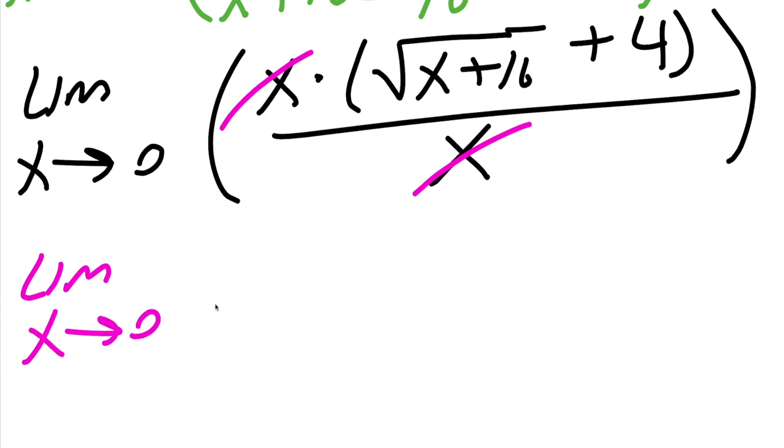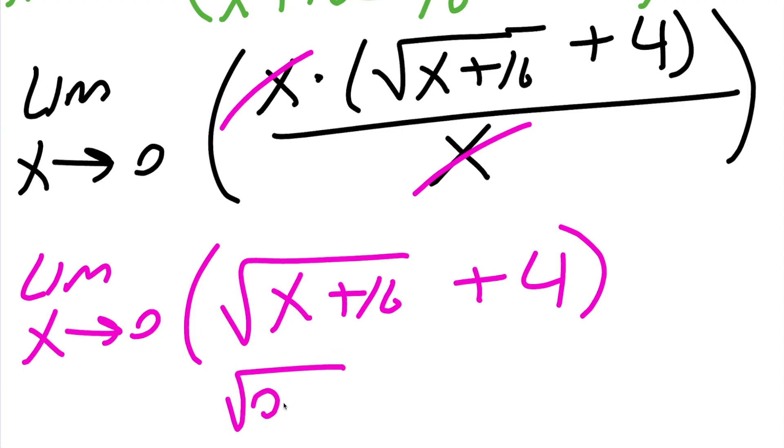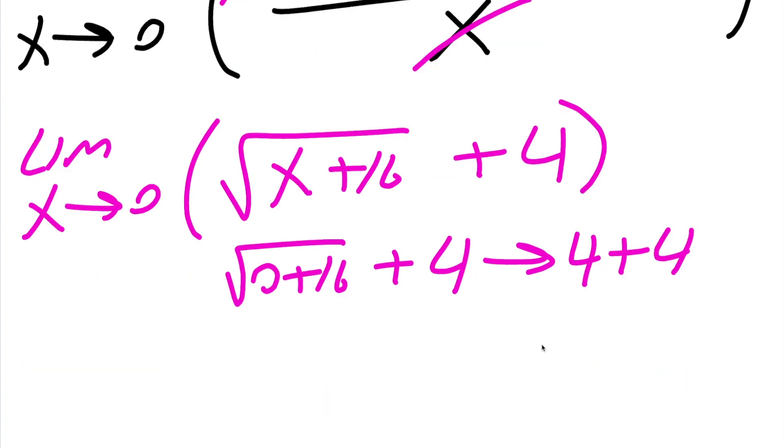Limit of x approaching 0, the square root of x plus 16, plus 4. And now we can try plugging in and see if it works. So if I plug in a 0 here, I get the square root of 0 plus 16, plus 4. And we get the square root of 16 is 4, so we get 4 plus 4, which we're going to get 8. So our final answer is 8.